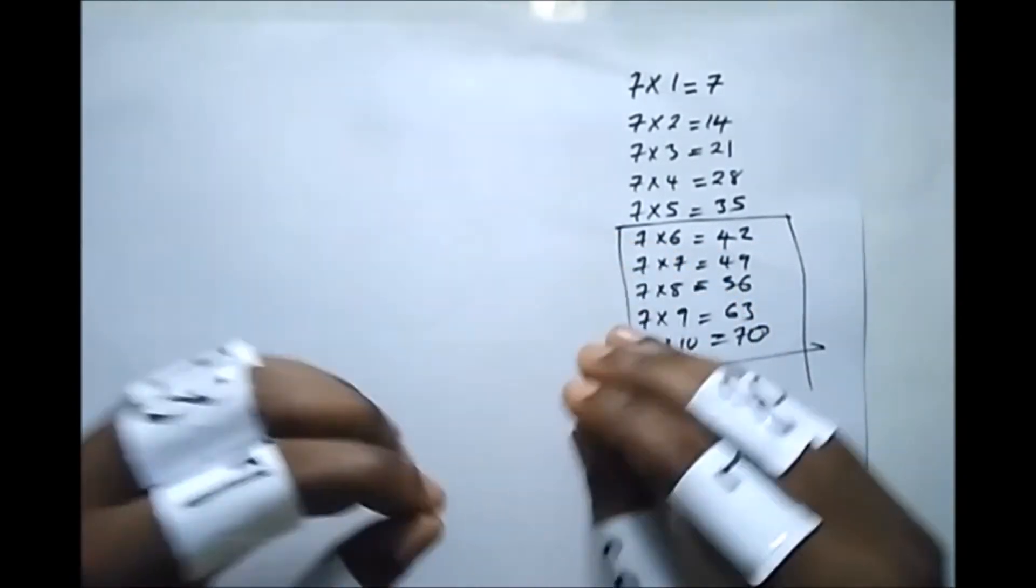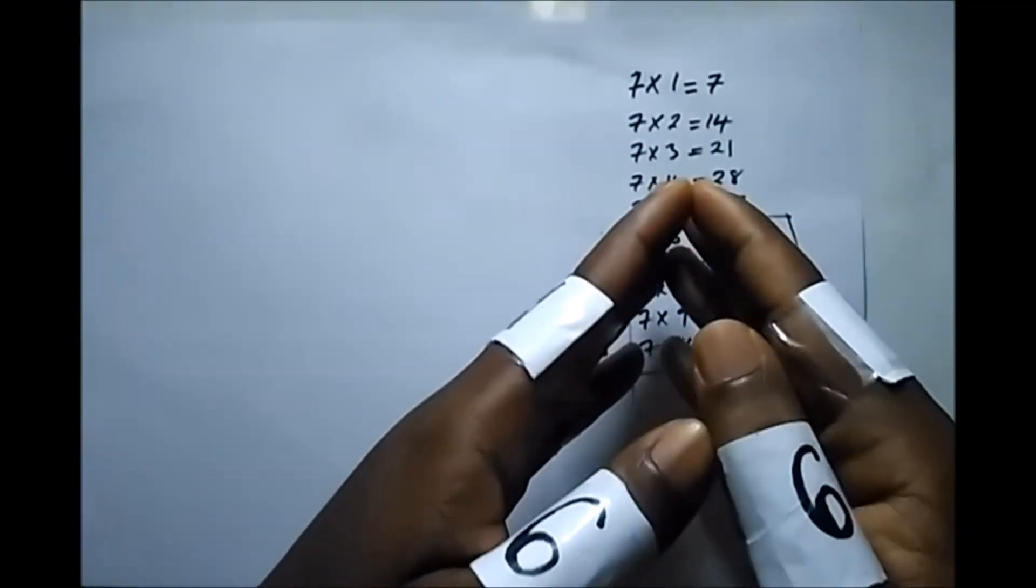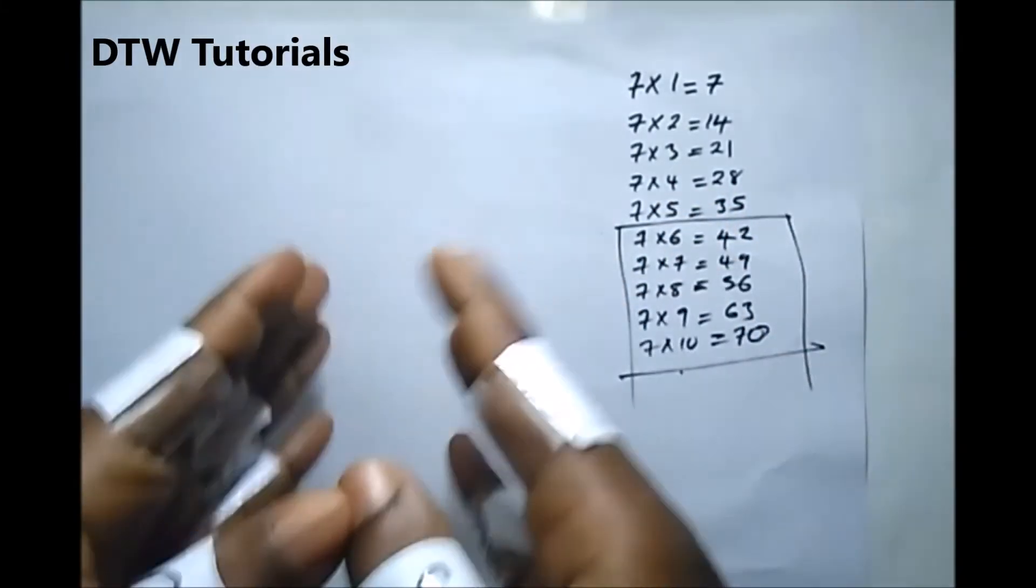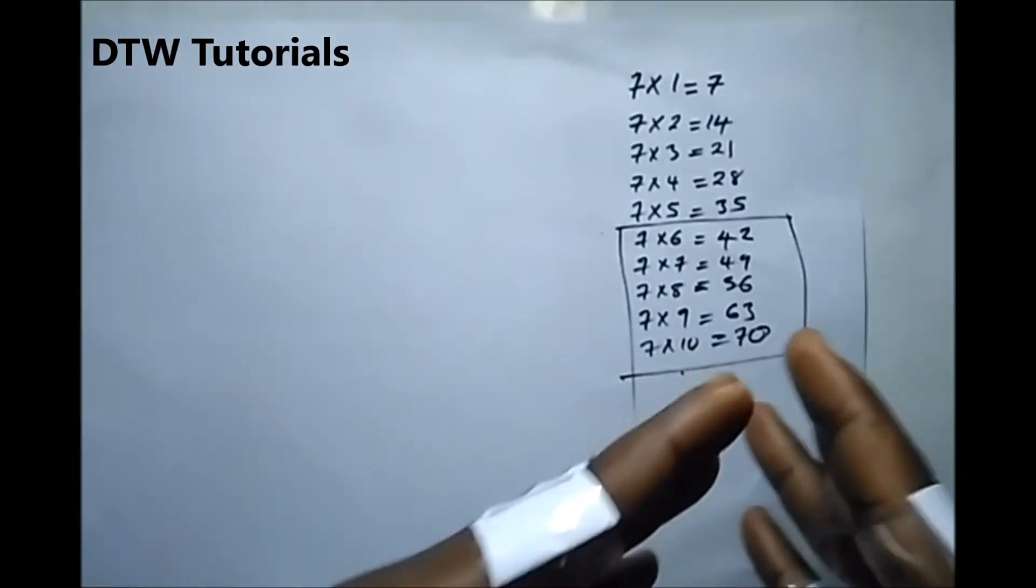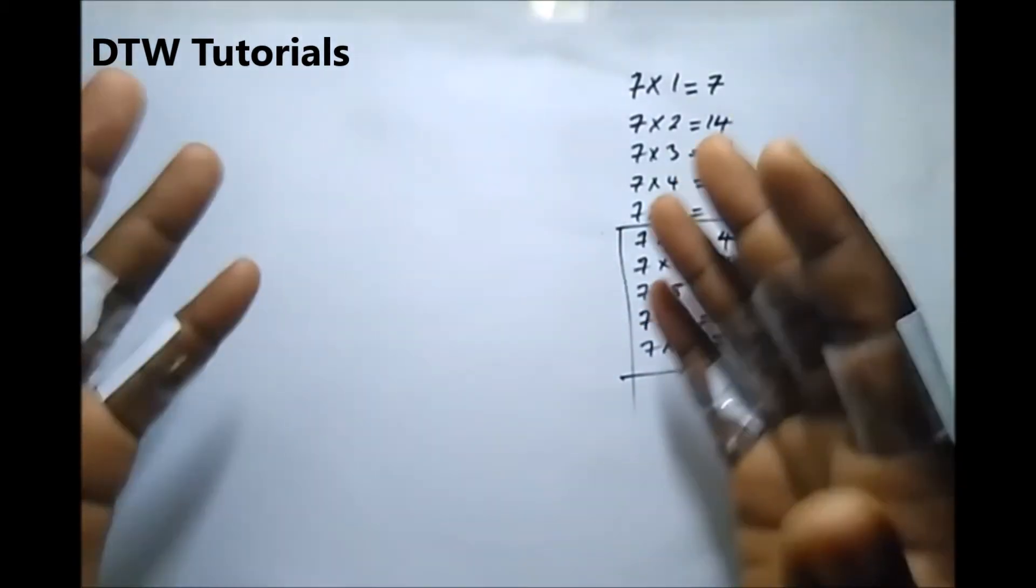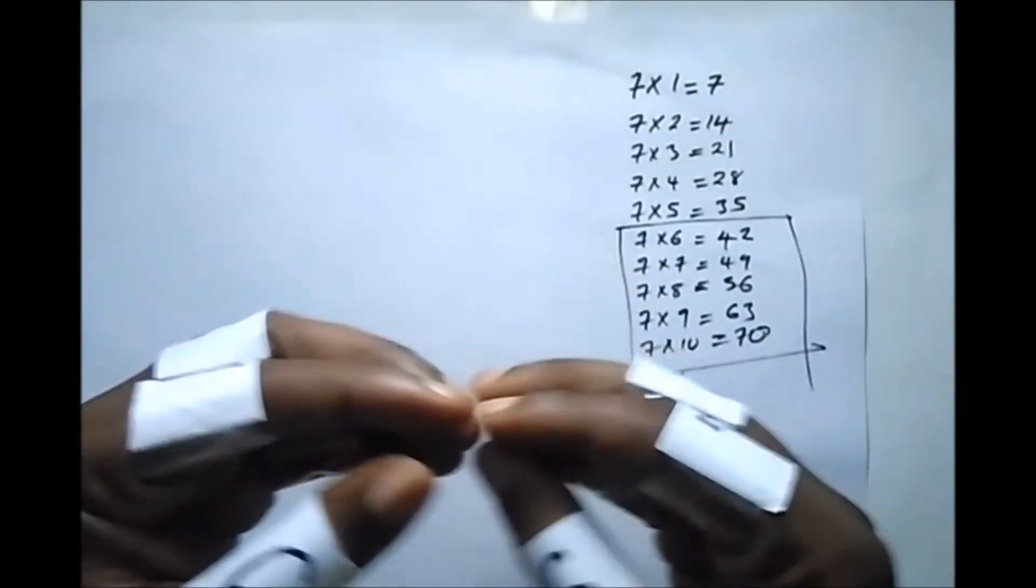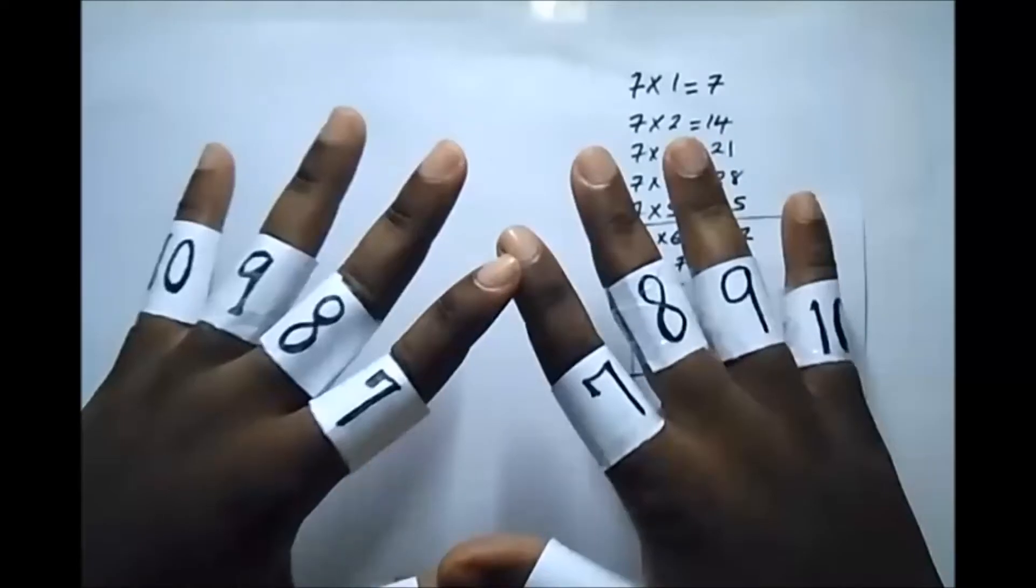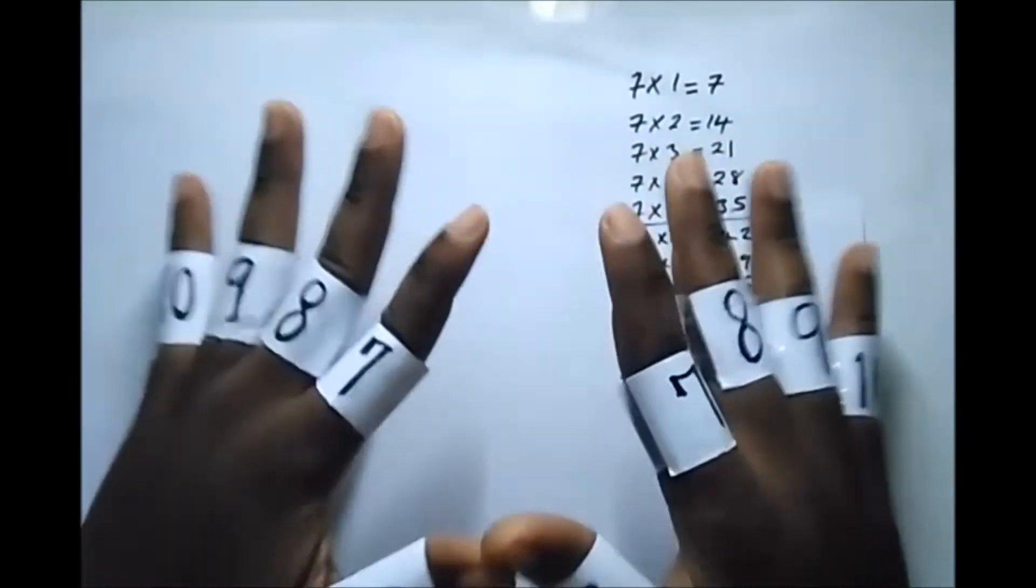Put in your mind that you need to know your one times table to five times table because that's quite easy. But I know students always have a problem from your six times table downwards. From my years, like about nine years of teaching, I notice that multiplication table is what gives people problems in maths. So I am doing this to help you with your maths.